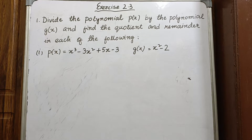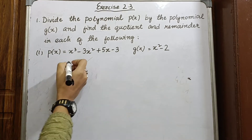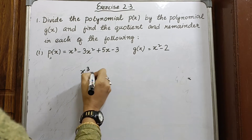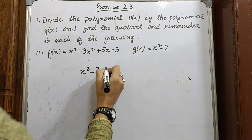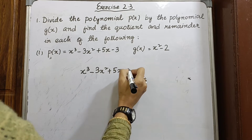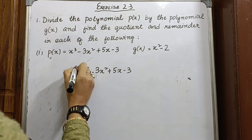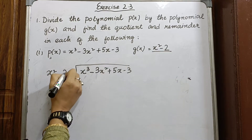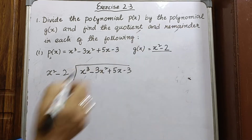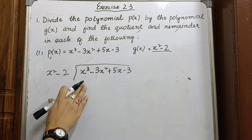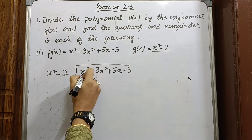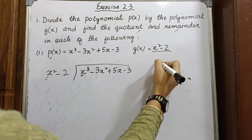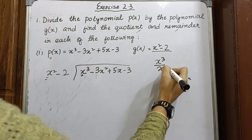In the same way we do the division process of numbers, we will first write this dividend. This is the dividend and we will divide by the divisor x² minus 2, and we will find the quotient and the remainder. First, you divide the first term of the dividend by the first term of the divisor — x³ divided by x².